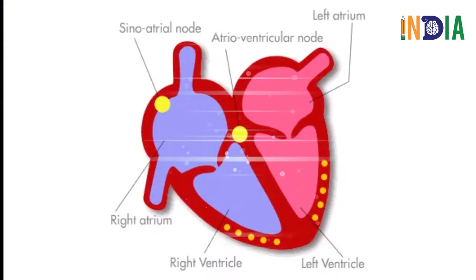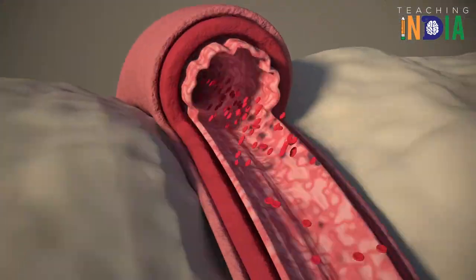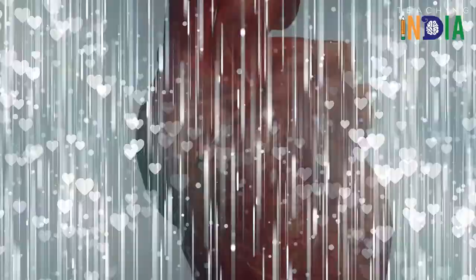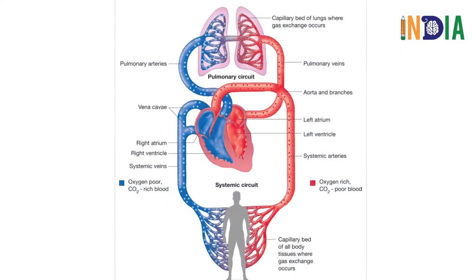As a result, the muscle tissues of the ventricles contract and blood is pushed forcefully out of the heart. For pulmonary circulation, blood exits from the right ventricle, and for systemic circulation, blood exits from the left ventricle.